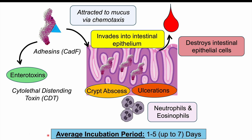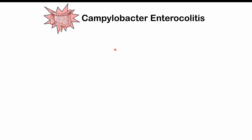The average incubation period is anywhere from one to five days, up to seven days. Signs and symptoms generally occur within one to two days of exposure, but could be up to seven days in some cases. All that pathophysiological damage leads to what we call Campylobacter enterocolitis — inflammation of the intestines and colon — most often in the jejunum and ileum of the small intestines.